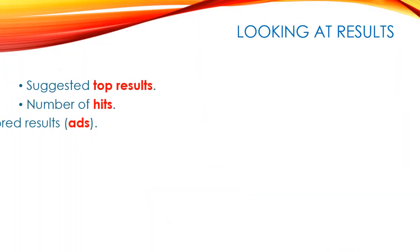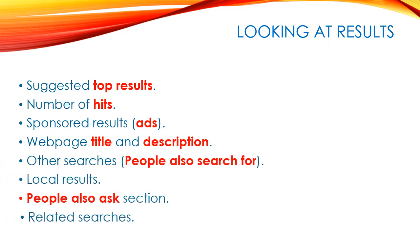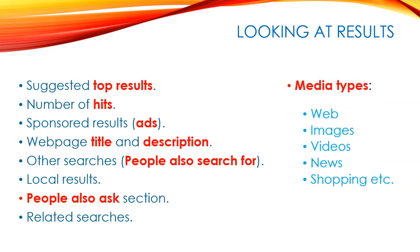Now that we've learned how to do our searches using advanced scripting, let's look at the results. In the Google search engine, you're going to see top results, number of hits — a hit being anytime it matches a webpage to your search parameters. Sponsored results usually float to the top because those are paid ads. Web pages always have a title and a description. Google also incorporates people also search for, local results, people also ask sections, related searches, and different media types: web, images, videos, news, and so on.